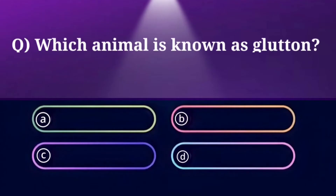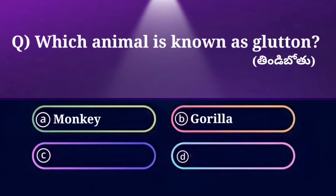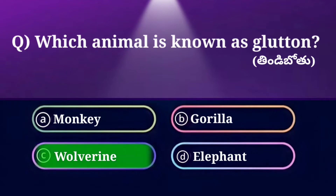Which animal is known as 'glutton'? Option A: Monkey, B: Gorilla, C: Wolverine, D: Elephant. And the answer is Wolverine.